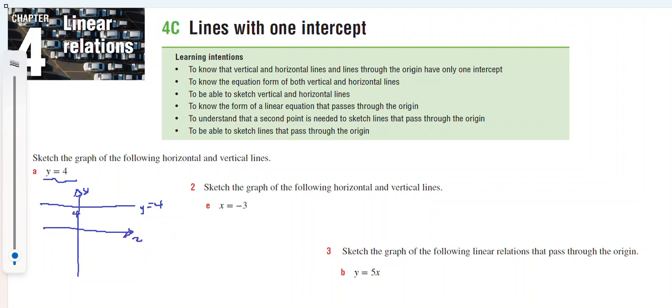Looking at part 2e, we have a vertical line at x equals negative 3.